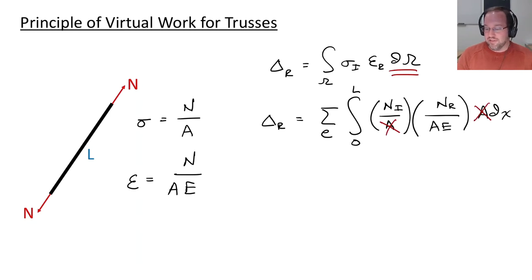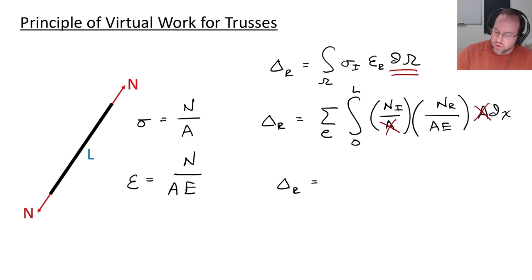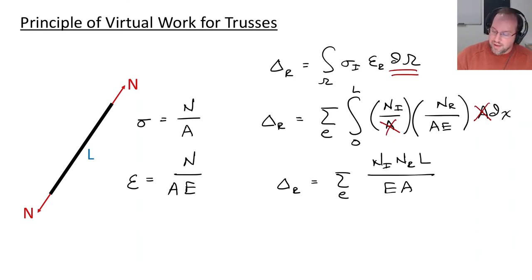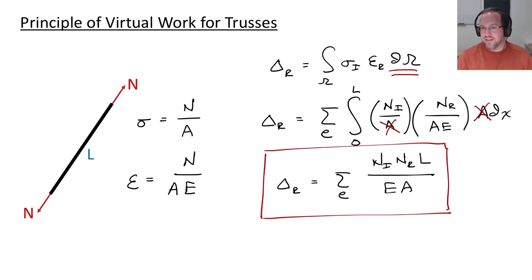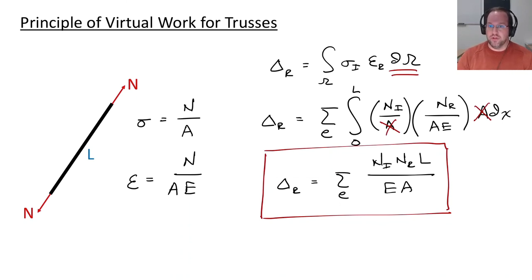Since Nᵢ and Nᵣ are constant over any truss element, the integral simplifies to a summation. The final formula is: δ = Σ (Nᵢ · Nᵣ · L) / (EA), summed over all elements. This allows us to calculate displacement at any location in the truss by finding internal forces for two systems: the real system under actual applied loads, and the unit load system with a unit load at the location of interest.